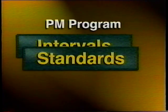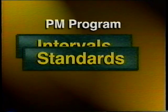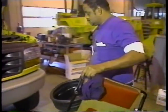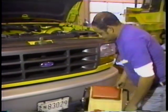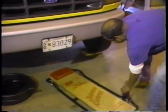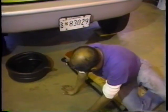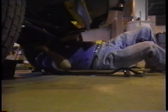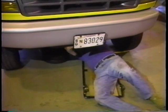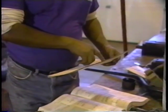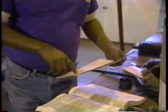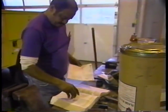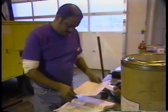In conjunction with setting service intervals, the type of service and inspection to be performed at each interval must also be established. It is best to designate the type of services by a code such as PM A, B, or C, or PM 1, 2, or 3. The particular method selected is not important, but it is important to have the specific services designated. In this way, when a specific unit is due for a PM-B service, the mechanic will know specifically what services and inspections are to be performed.